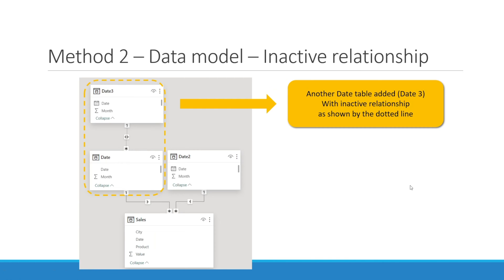Today I want to build on that data model from our previous tutorial. I'm going to add a new date table — date three — and link it up to our original date table using inactive relationship. As you can see, these tables are connected using a dotted line, and that is a sign of an inactive relationship.